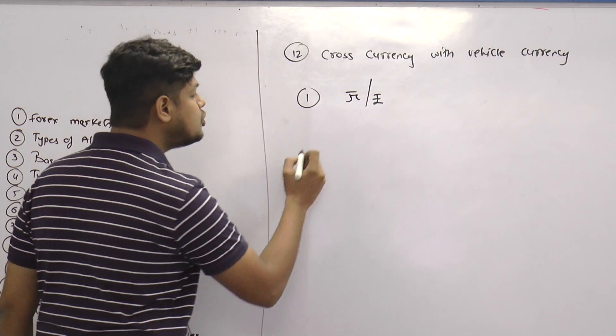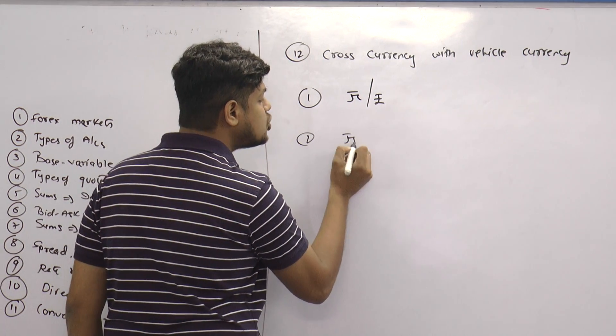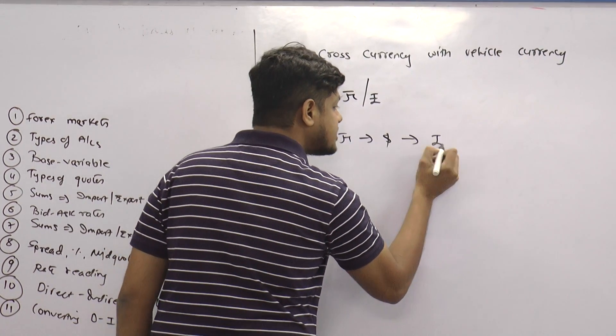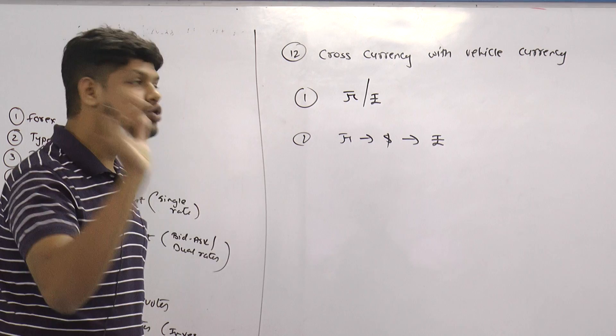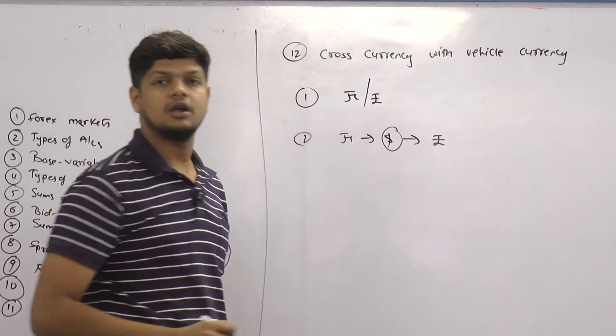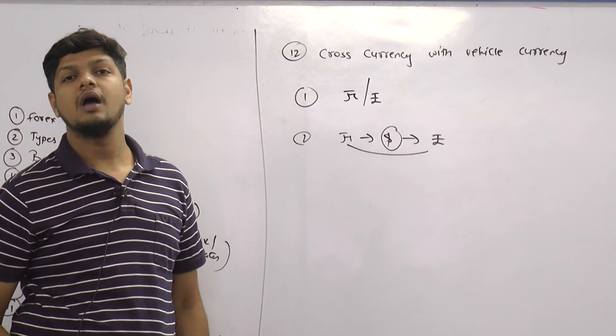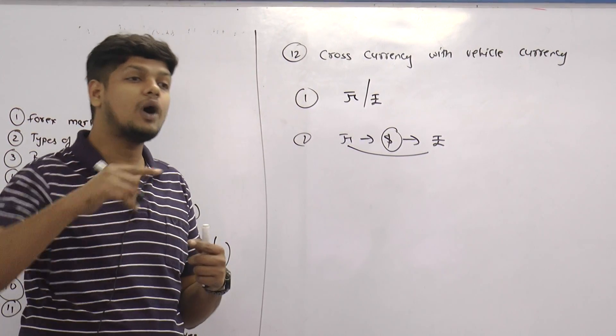So that vehicle currency probably can be a currency which is easily tradable with both. I may trade Yuan with dollar and the dollar with Rupee. So I am using a middle currency in order to get a direct rate between Yuan and Rupee. I am channelizing it through another currency.